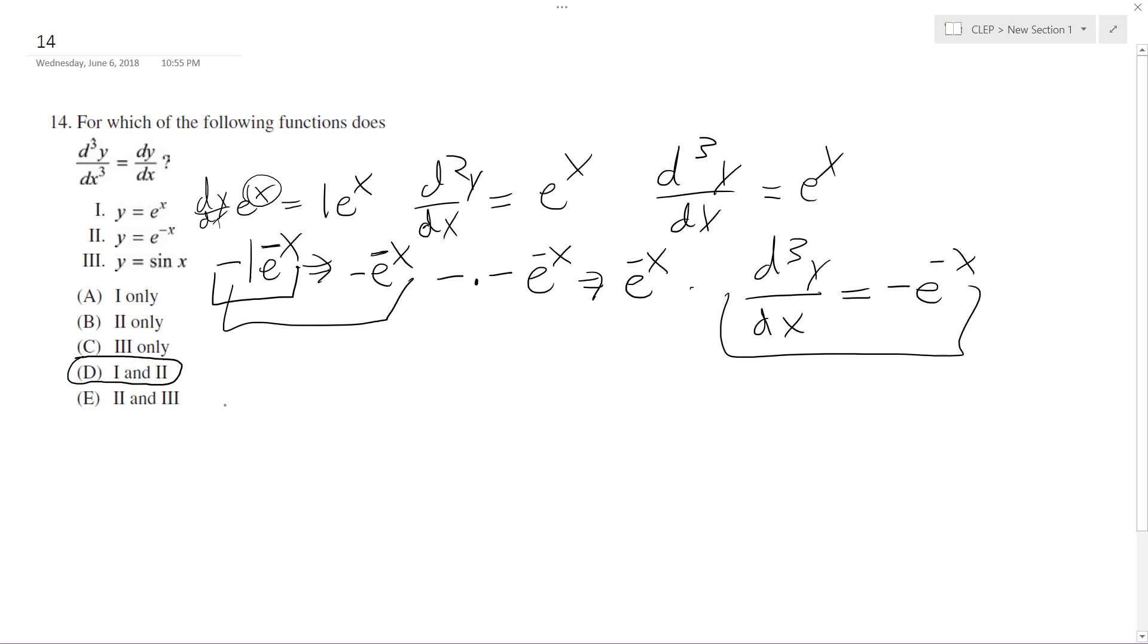What about the third one? dy dx or y prime of sine of x is going to be equal to cosine x. y double prime is equal to negative sine of x. y triple prime is equal to negative cosine of x. And as you can see here, these two are not equal.